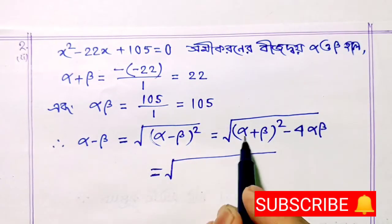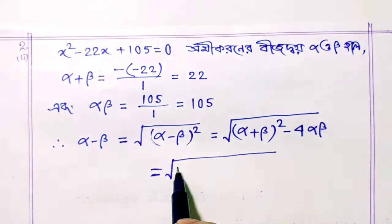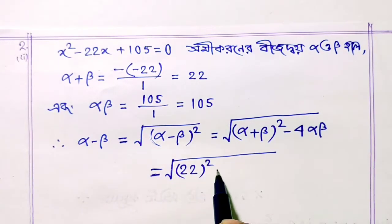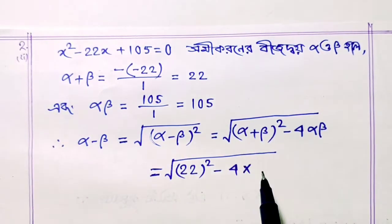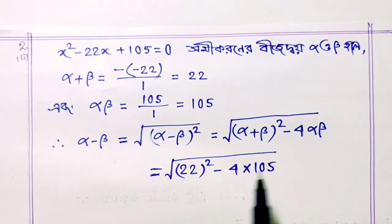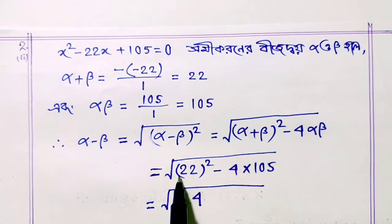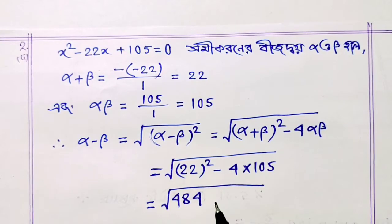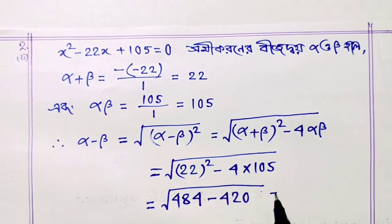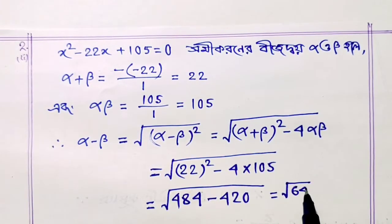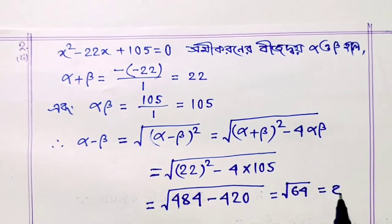Alpha plus beta equal 22. Square root of 22 squared minus 4 into alpha beta. 22 into 2 is 44, plus 4 is 48, minus 420 equals square root of 64, equal 8.